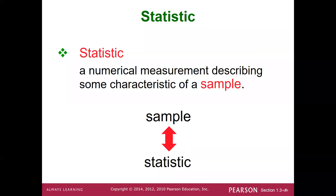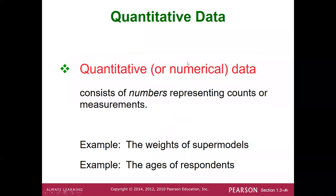Parameter, population, sample, statistic — when dealing with a statistic, it comes from a sample. Notice both 'statistic' and 'sample' start with the letter S — that's how you keep them straight. A population corresponds to a parameter — both start with P. In MA 120, everything we do is based on quantitative data; all calculations are based on quantitative analysis, using numerical data.